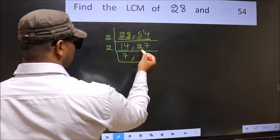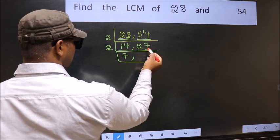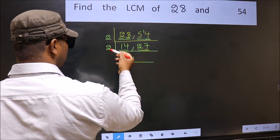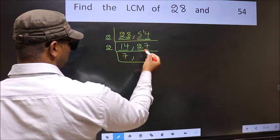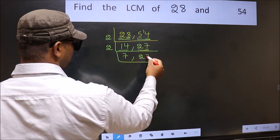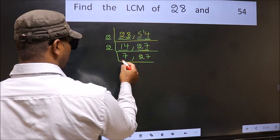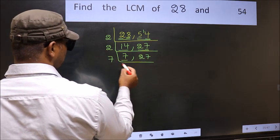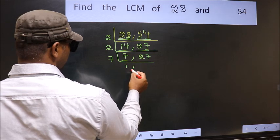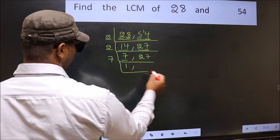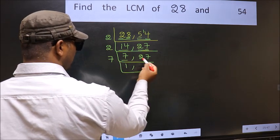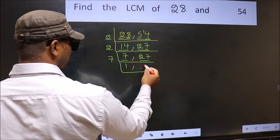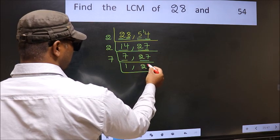Now the other number is 27. Last digit 7, not even, so this is not divisible by 2 — we write it down as it is. Now we have 7 here. 7 is a prime number, so 7 times 1 is 7. The other number 27 is not divisible by 7, so we write it down as it is.